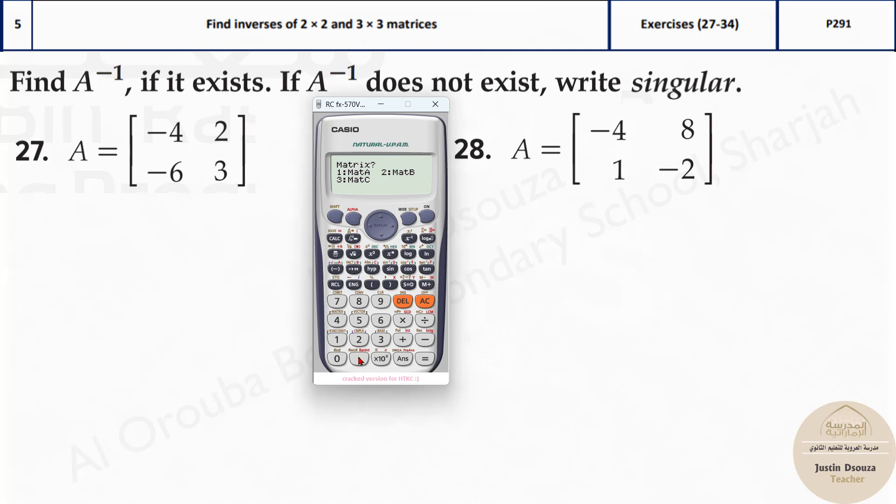Press MATRIX A that is option number 1 and look at the dimensions of this matrix. It is 2x2, 2 rows, 2 columns. 2x2 is option number 5 and type the matrix in. Negative 4 then press equal to. Once you do it press equal to and minus 6 equals to 3.